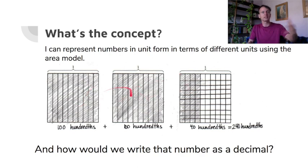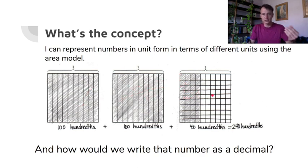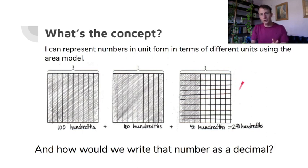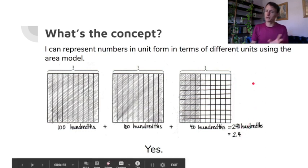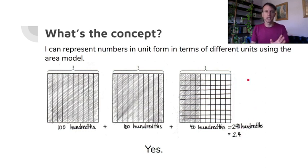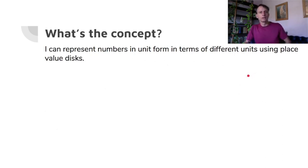240 pennies — do you see two dollars forty cents as 240 pennies? Great. So how do we write that as a decimal? The same exact way: 2.4. And if you say '2.40,' you are also correct.